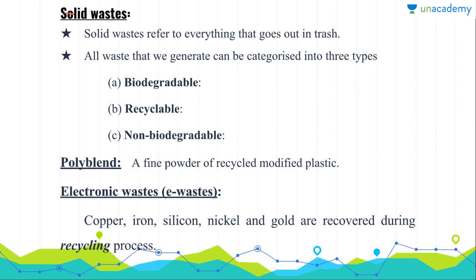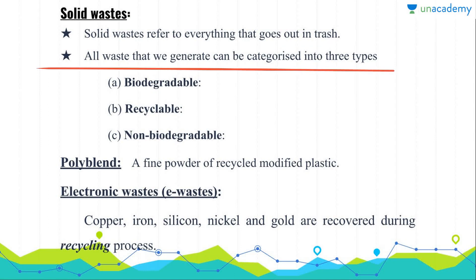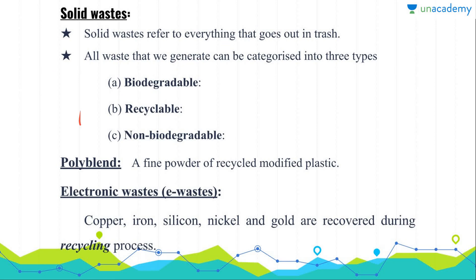Now, what is solid waste? Solid waste actually refers to everything that goes out in trash. All waste that we generate can be categorized into three types: biodegradable, recyclable, and non-biodegradable.